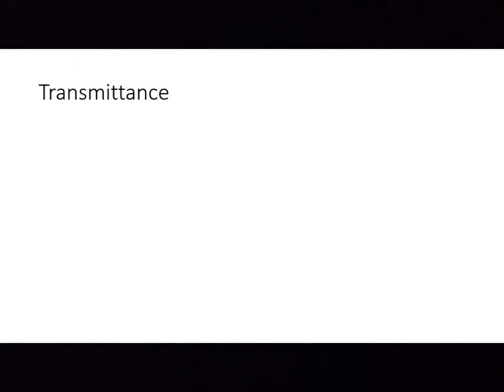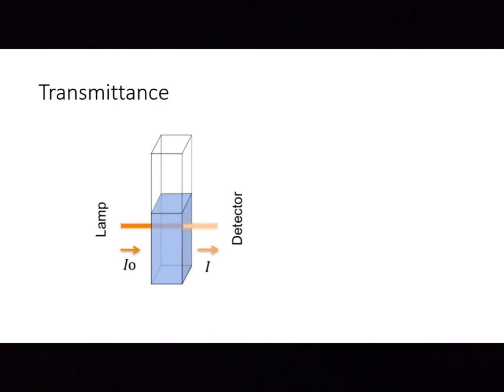For example, let's consider a sample solution and incident electromagnetic radiation or light on it. The radiation that is incident on the sample has some intensity, and let's denote that as capital I naught.